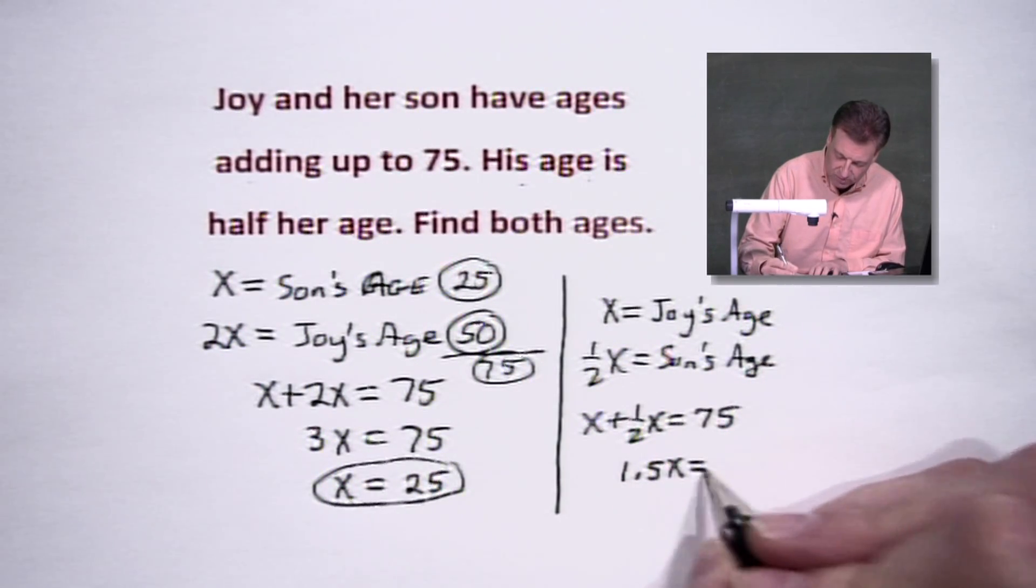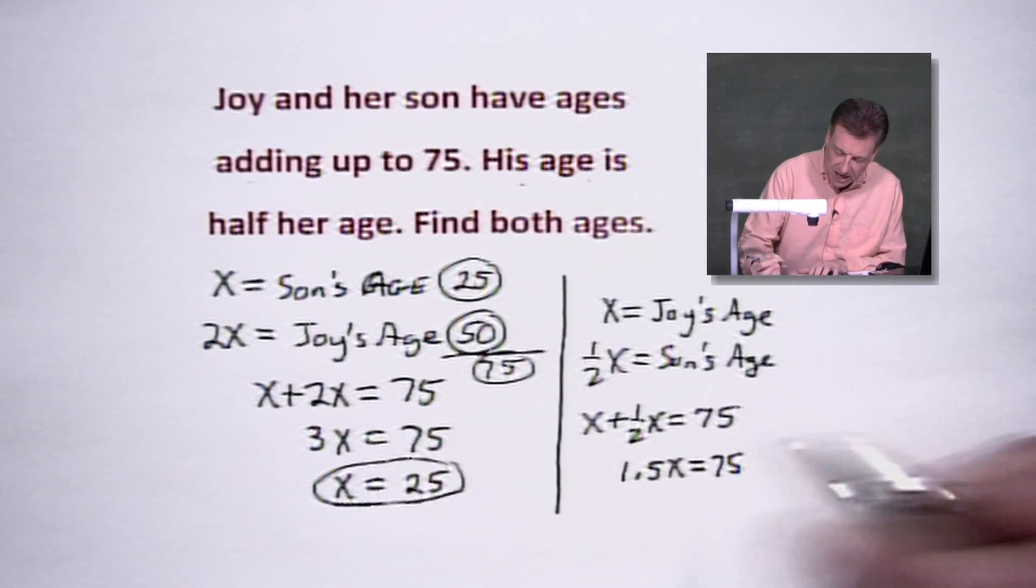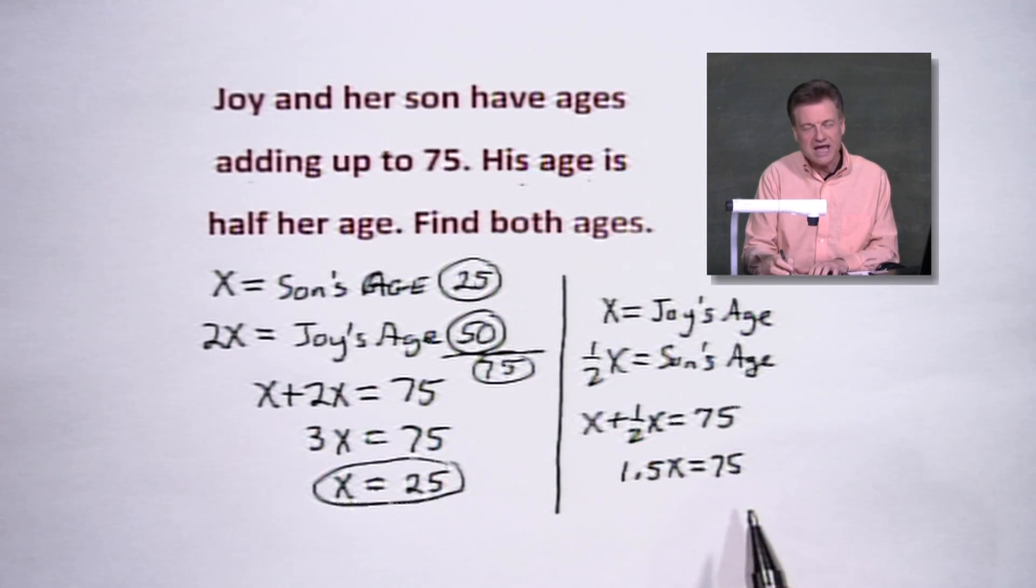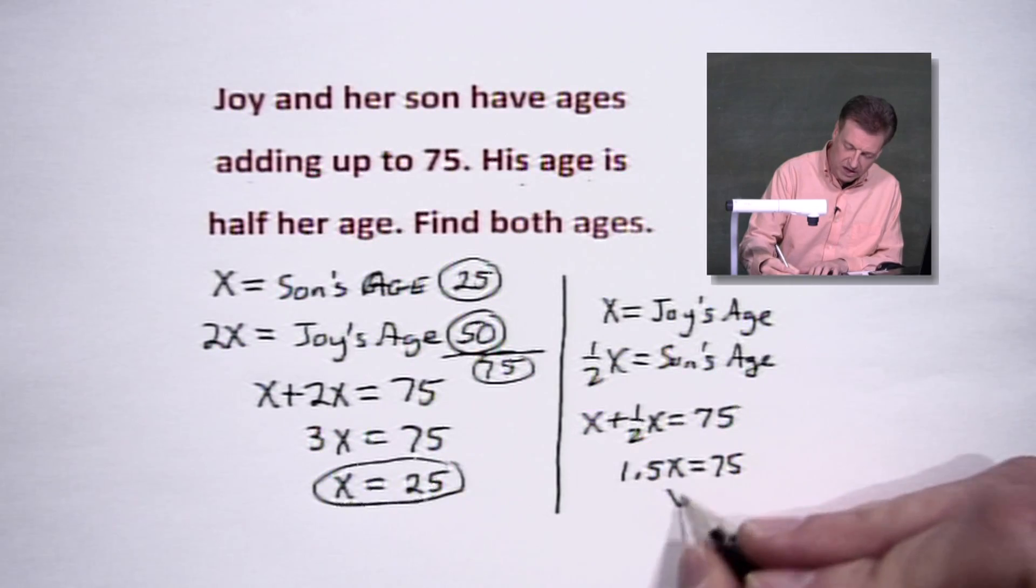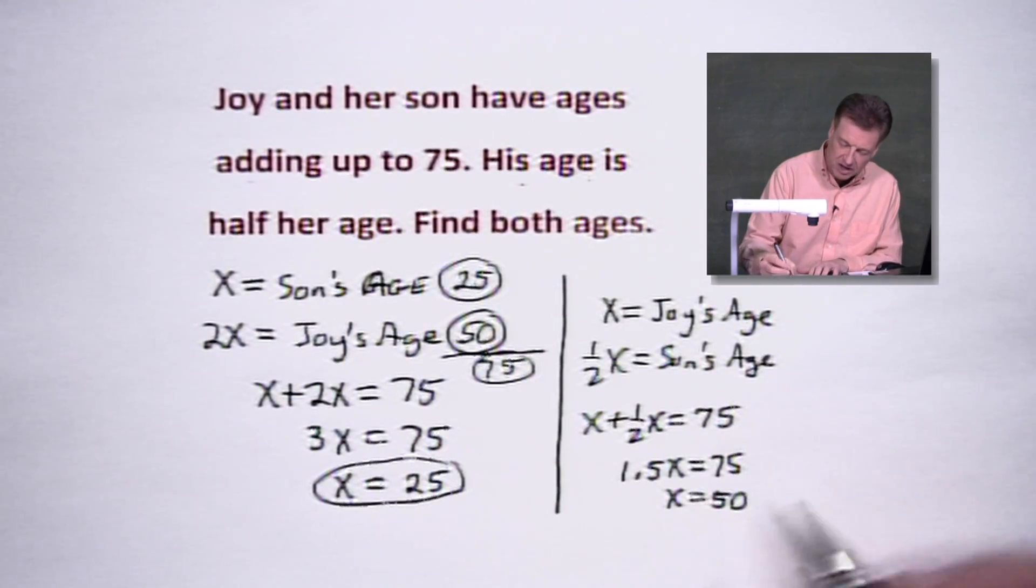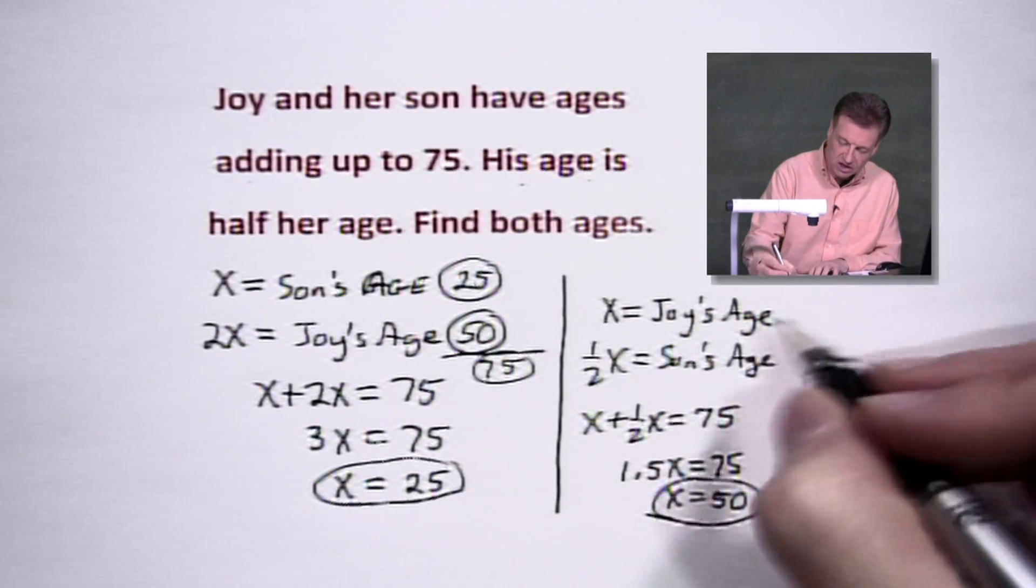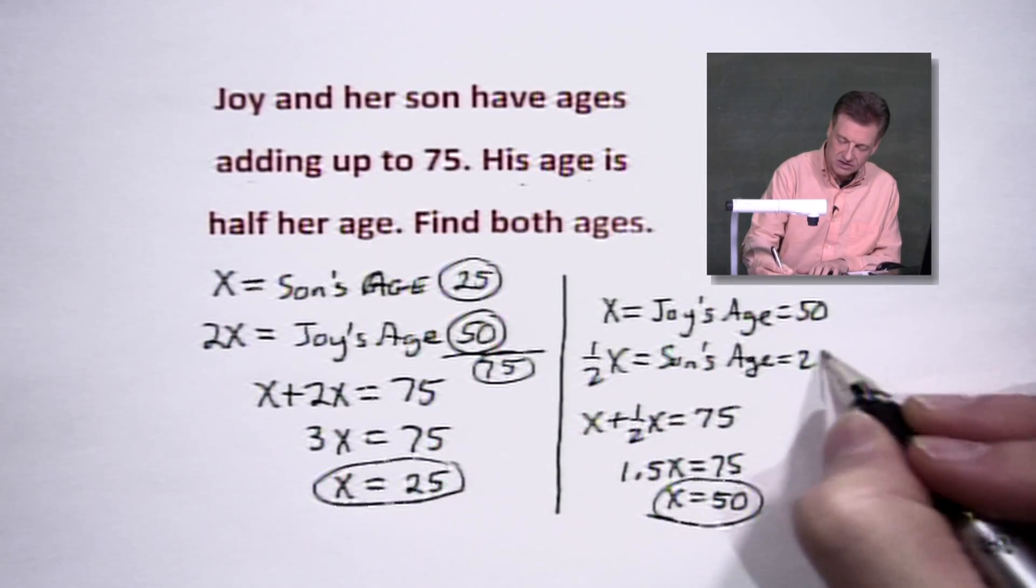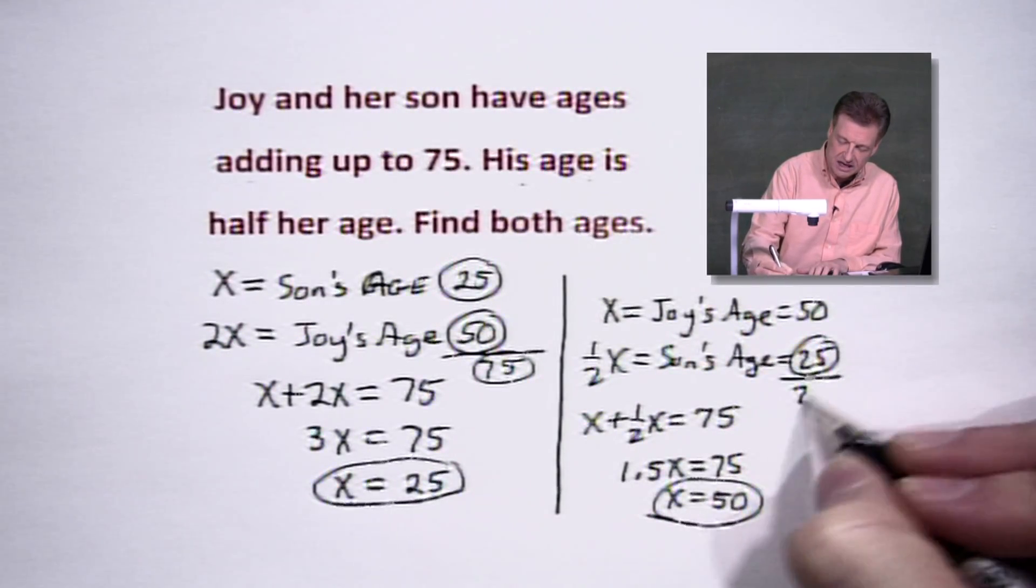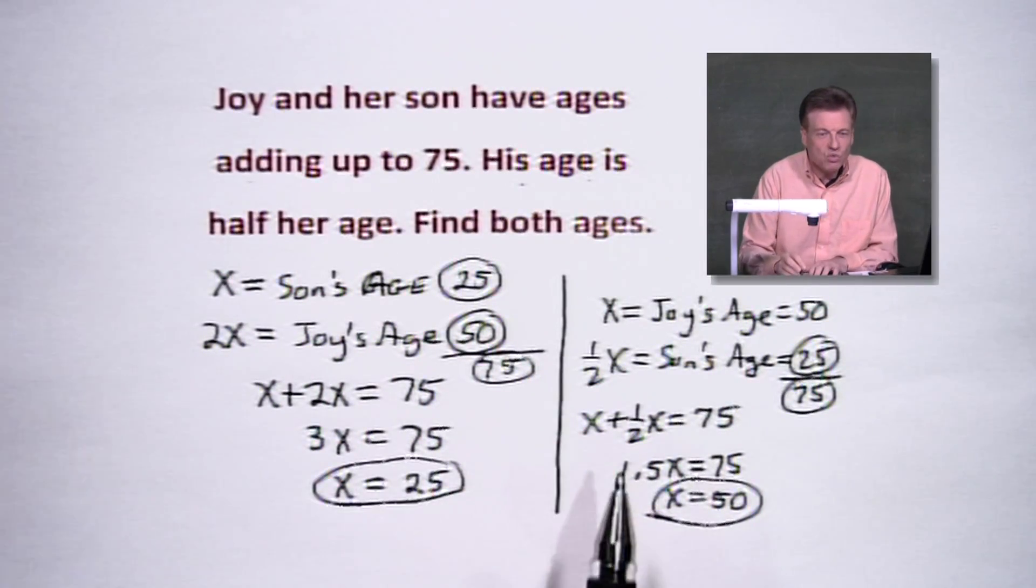And this time, if we divide by the 1.5, dividing into 75, we're going to get X equals 50. But remember, that's good because that's Joy's age. Half of that would be the son's age. They still add up to 75. So either way, good way to work out this problem.